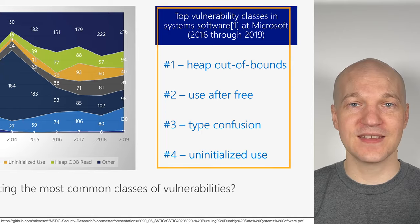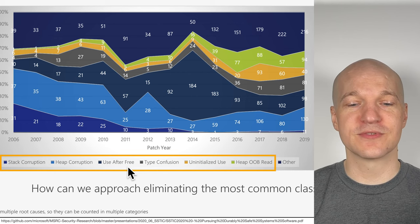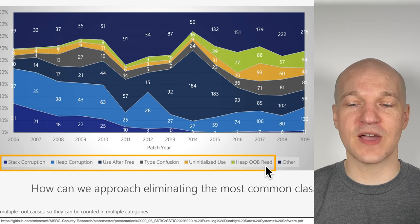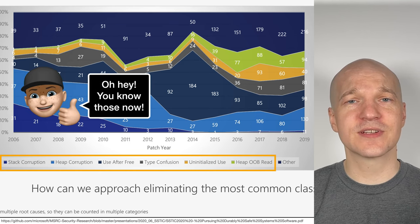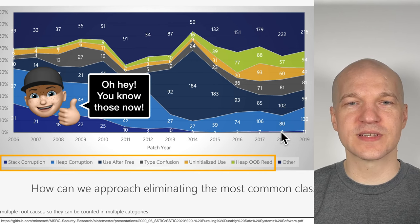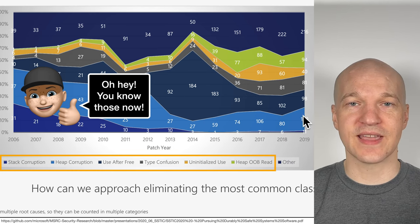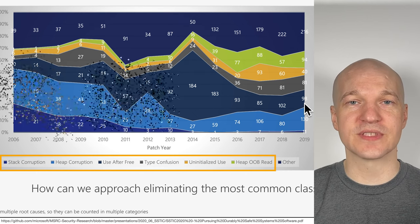You understand all these other vulnerability types as well: stack corruption, heap corruption, use after free, type confusion, uninitialized use, and heap out of bound read — which would be something like information disclosure or info leak vulnerabilities. You understand all those too. With Vulnerabilities 1001 alone you had limited insight into these various vulnerabilities, but now you have a pretty good overview of the majority of vulnerabilities in Microsoft's statistics. Google has published similar statistics saying typical memory corruption vulnerabilities account for about 70% of the bugs they've seen as well.